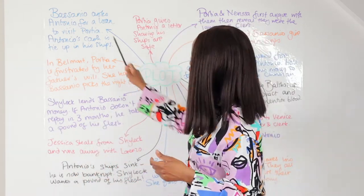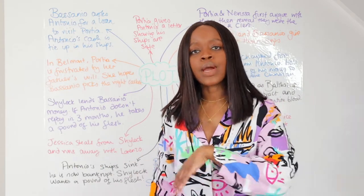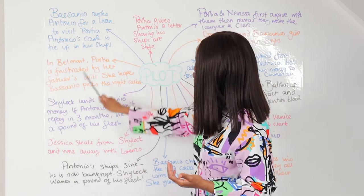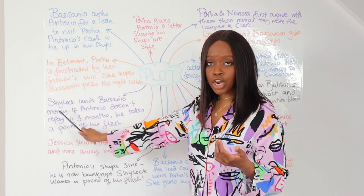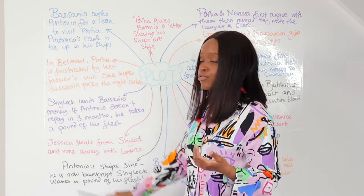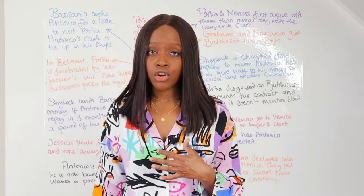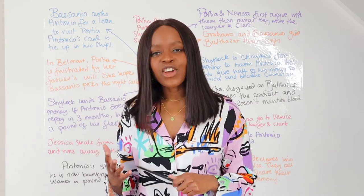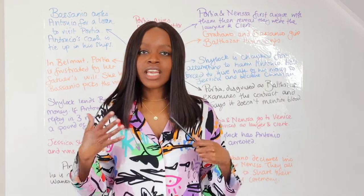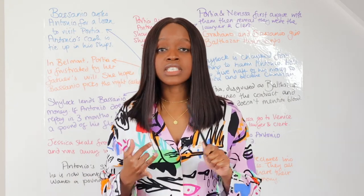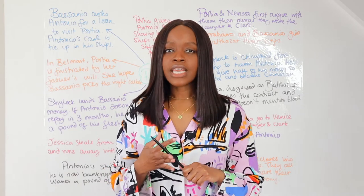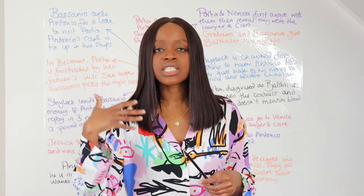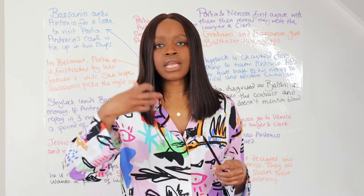Back in Venice, after Bassanio gets Antonio's guarantee that he can use his name to borrow money, Bassanio meets the Jewish money lender Shylock, who agrees to lend him the 3,000 ducats. However, we learn that Shylock hates Antonio — in fact, they are enemies. This is because Antonio is very anti-semitic: he looks down on Shylock because he is Jewish, has even spat on him, and also dislikes the fact that Shylock charges high interest on the money he loans.